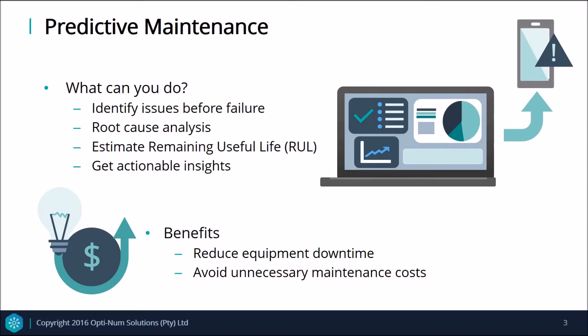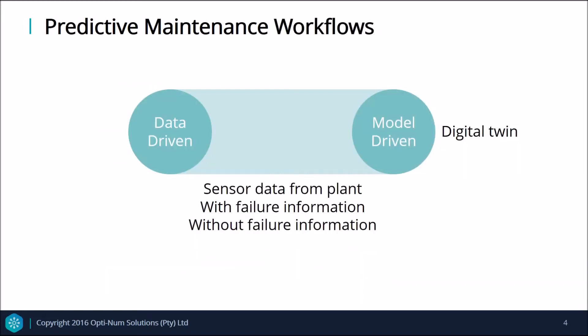So how do we go about implementing predictive maintenance? Based on the data that we have available, we can decide on an appropriate workflow. In general, the workflow can be data-driven or model-driven. With a data-driven workflow, we only use the sensor data from the plant or equipment to create a predictive algorithm, which will differ slightly depending on whether failure information is available or not. When we don't have failure data, we may decide to simulate failure information by creating a digital model of the physical plant and then test multiple scenarios in a safe, low-risk digital environment.